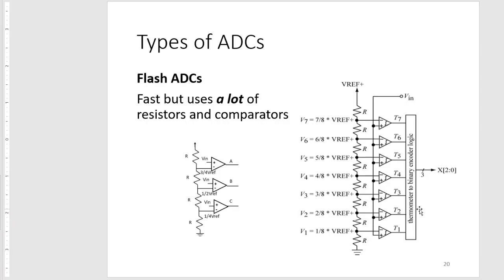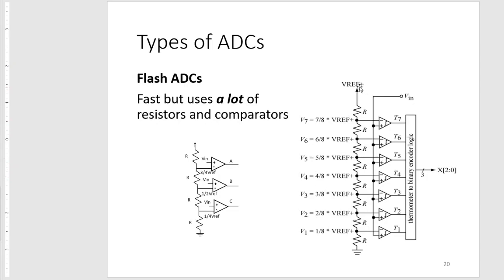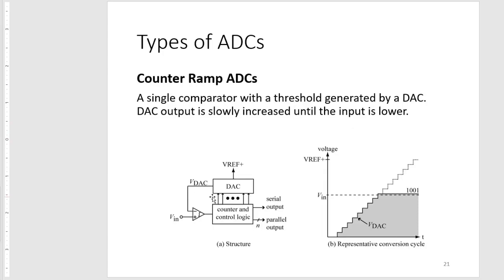We want to avoid using too many components in our design, as that would mean too many points of failure. What the counter ramp ADC does is instead of having all these resistor values at the same time, we use a DAC that we configure and a single comparator.